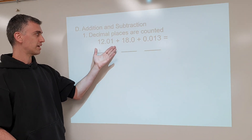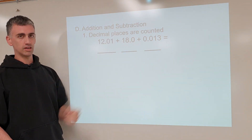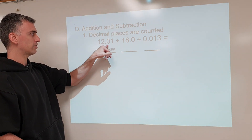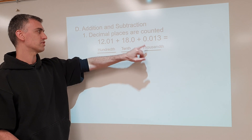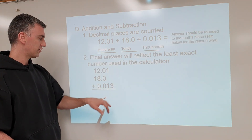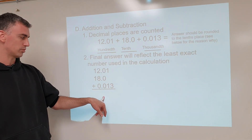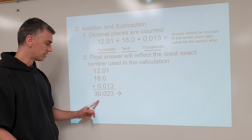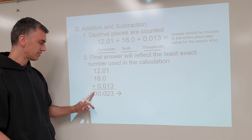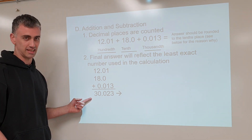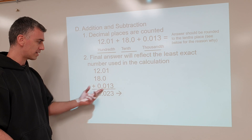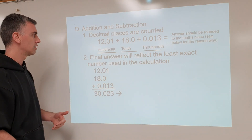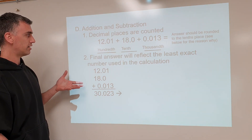Whether you do addition or subtraction, you have to count decimal places to figure out how to round your number. If you take a calculator and type these in, you'll get a number, but if you just write that as your final answer it's not acceptable, because it does not reflect the accuracy of the data used to get that answer. Rounding is a reflection of the quality of your data.